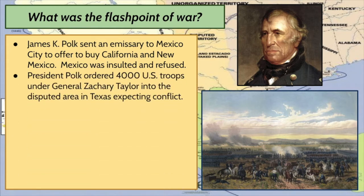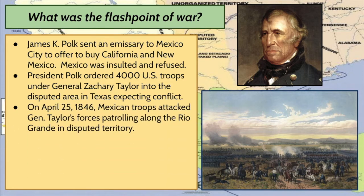President Polk then ordered 4,000 U.S. troops under the command of General Zachary Taylor into the disputed area in Texas — the area between the Nueces and Rio Grande Rivers. They basically sent troops over the Nueces River into the disputed territory, and James K. Polk fully expected there to be a conflict when doing this. They were basically trying to provoke Mexico into attacking U.S. troops, and they obliged. On April 25, 1846, Mexican troops did attack General Taylor's forces patrolling along the Rio Grande in the disputed territory.